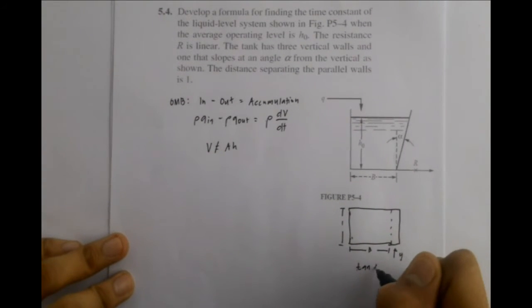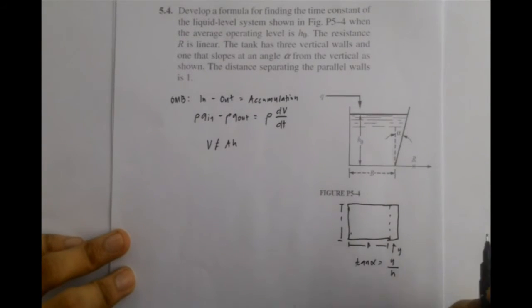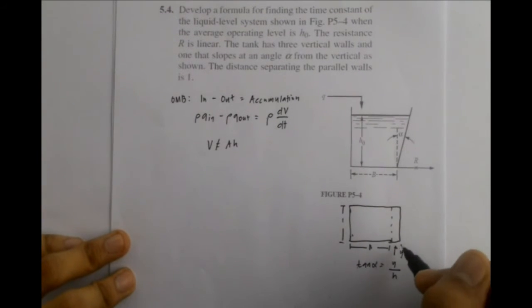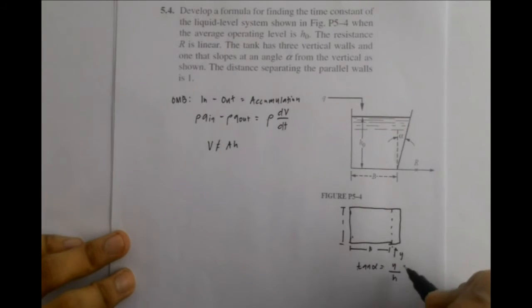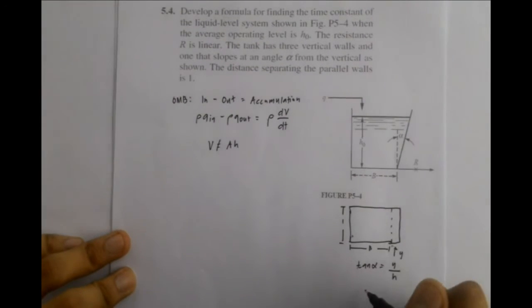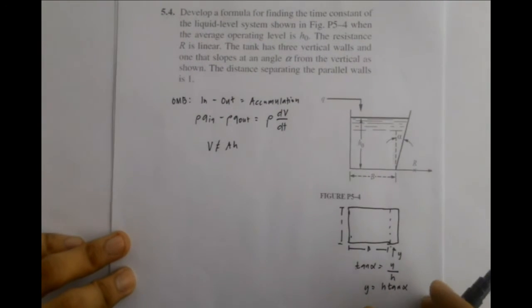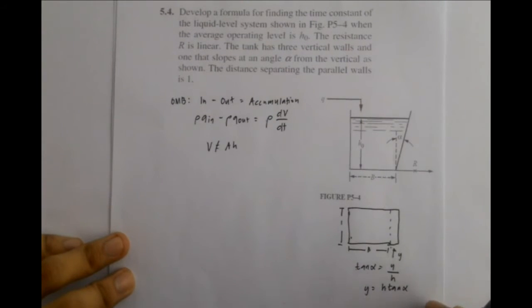The trigonometry tells us here that tangent alpha equals Y over H. Y here is what we're looking for and the H here is the height of the tank. Solving for Y, we get Y equals H tangent alpha. With this, we could now get the volume of the triangular component.